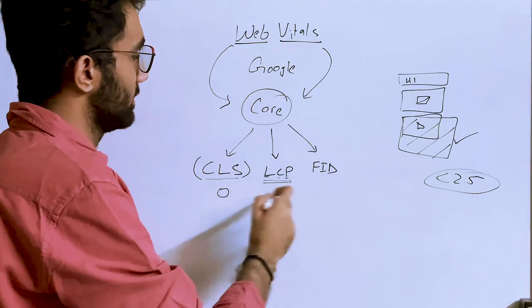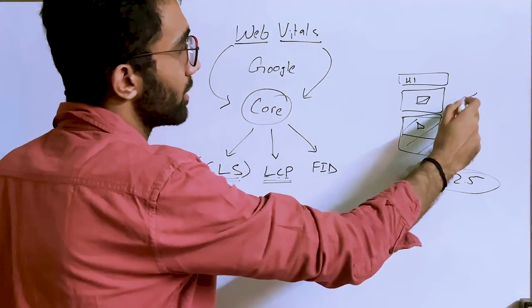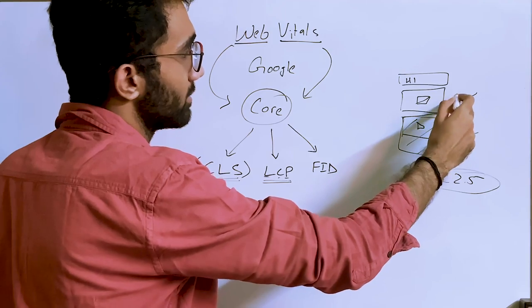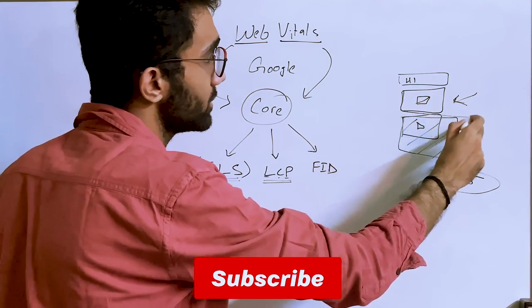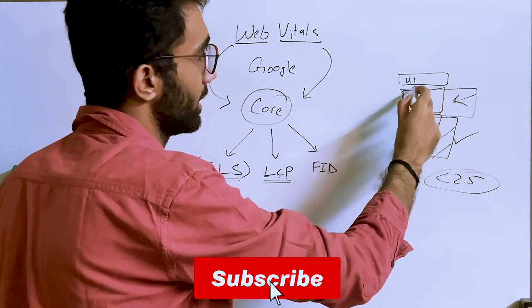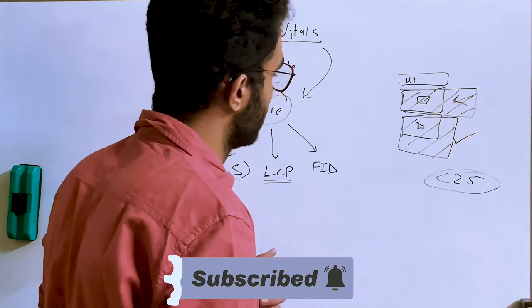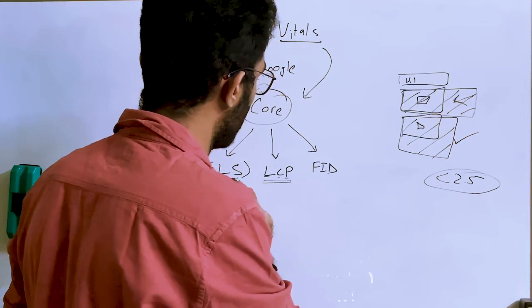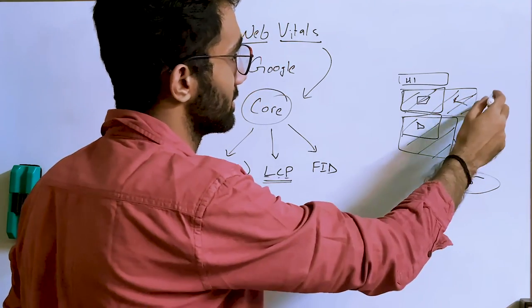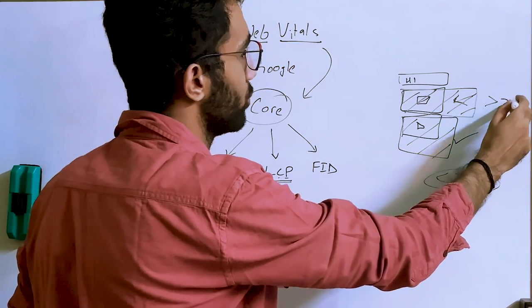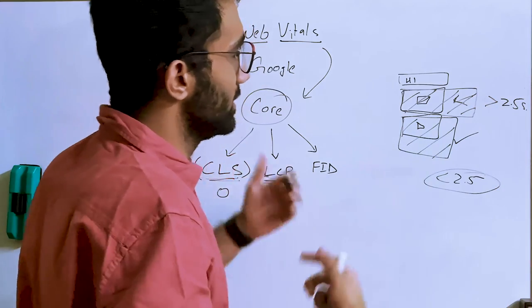According to Google, LCP should be less than 2.5 seconds for a good value. The faster the user can see the largest piece of the website, the better experience they'll have. CLS and LCP can also be related — if you're dynamically injecting the largest content element, you can have both a bad CLS score and a bad LCP score.